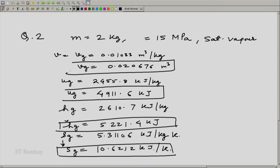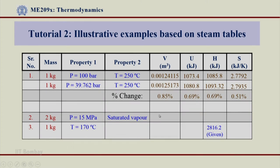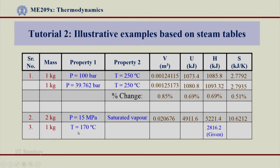Let us put those values in the answer sheet. For the second problem, we get: V equals 0.020676 m³, U equals 4911.6 kJ, H equals 5221.4 kJ, and S equals 10.6212 kJ/K. Now let us come to the last problem, which is a little tricky. What we have here are two conditions: T equals 170°C, and the second property given is enthalpy H equals 2816.2 kJ/kg.